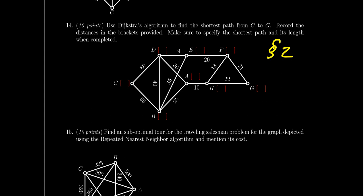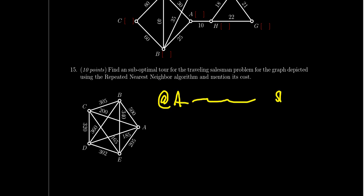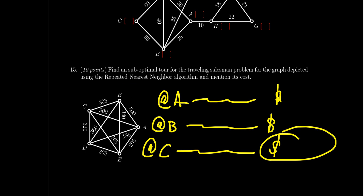Question number fifteen, the final question, is another traveling salesman problem using the repeated nearest neighbor algorithm. You run the nearest neighbor algorithm starting from every vertex — for a five-vertex graph, that's five runs. Write out each circuit and its cost, then identify the best result. You must do all of them for full credit. Note the result is suboptimal — there could be a better answer — but report the best one found by repeated nearest neighbor. This was introduced in lesson six alongside the nearest neighbor algorithm.